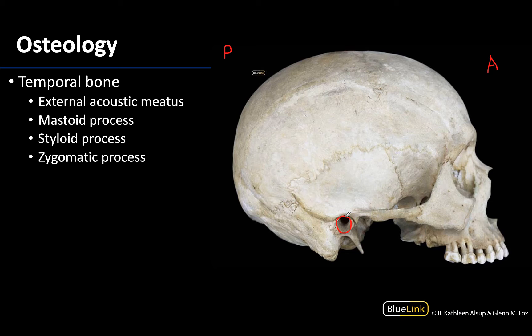The next two structures are review, so take a moment on your own to identify the mastoid and styloid processes. Pause the video if you need a minute to work through these, and if you have already determined them, good job — now let's review together. The mastoid process is going to be posterior inferior to the external acoustic meatus, so very closely associated with it. You can feel it when you palpate under your own ear and it will be one of the posterior borders of the parotid fossa. The styloid process is going to be a much more slender, stylus-like projection and is anterior medial to the mastoid process. This is going to be an attachment site for many muscles as well as ligaments.